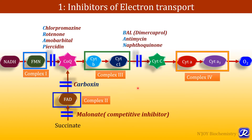The flow of electrons from complex III to cytochrome C is inhibited by British anti-Lewisite (dimercaprol), antimycin, and naphthoquinone.